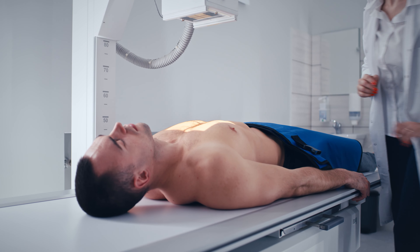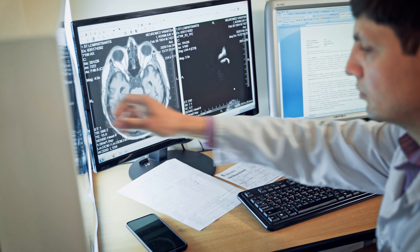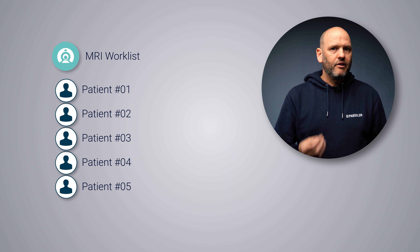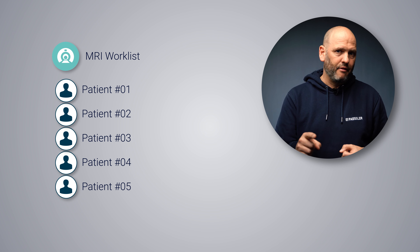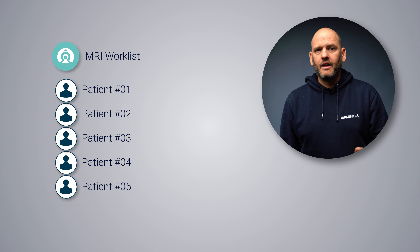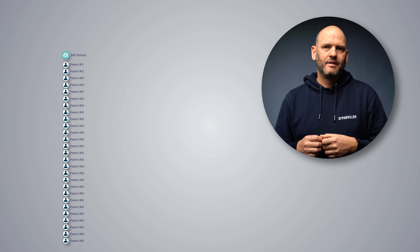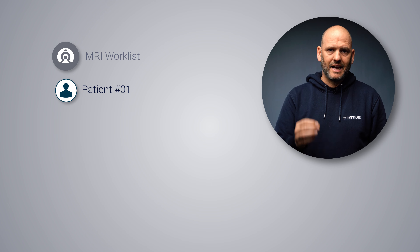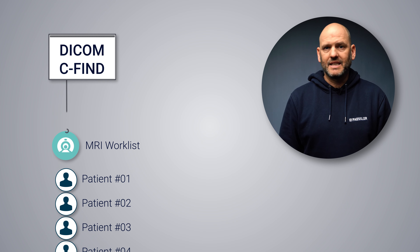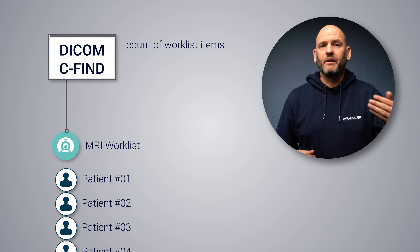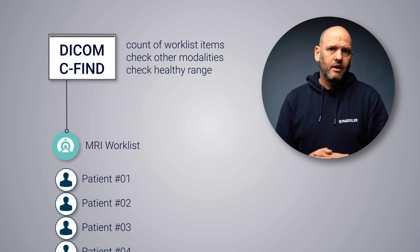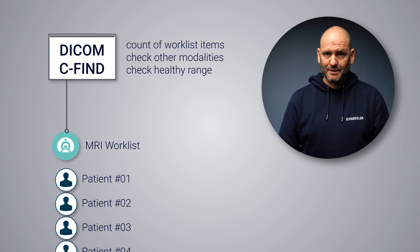Another DICOM request is C-FIND. Modalities have a worklist attached to them — basically a list of jobs that the modality has to process. If five patients need an MRI scan, the modality has five worklist items. The number of worklist items currently associated with the modality is a good indicator of that modality's health. If the modality has a bottleneck or malfunction, the number of items in the worklist might grow disproportionately. If the count is too low, it could mean requests are not being processed. You can use DICOM's C-FIND request to count the worklist items for a specific modality or across all modalities, and spot problems if the count goes higher or lower than expected.